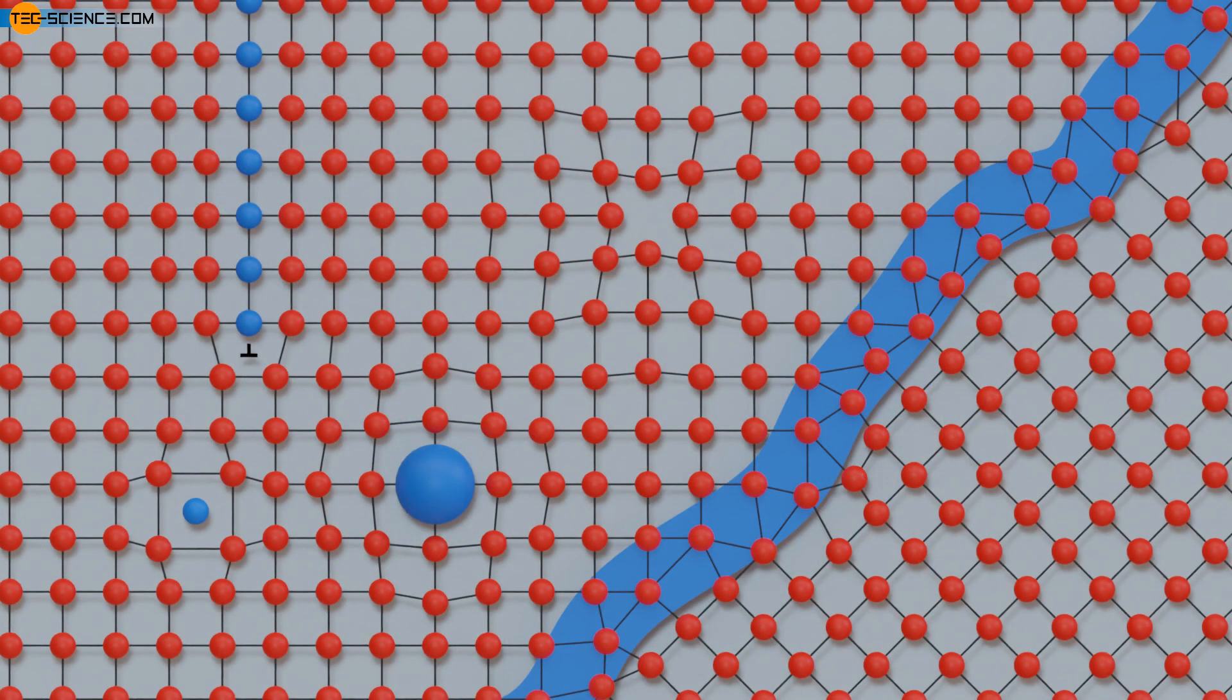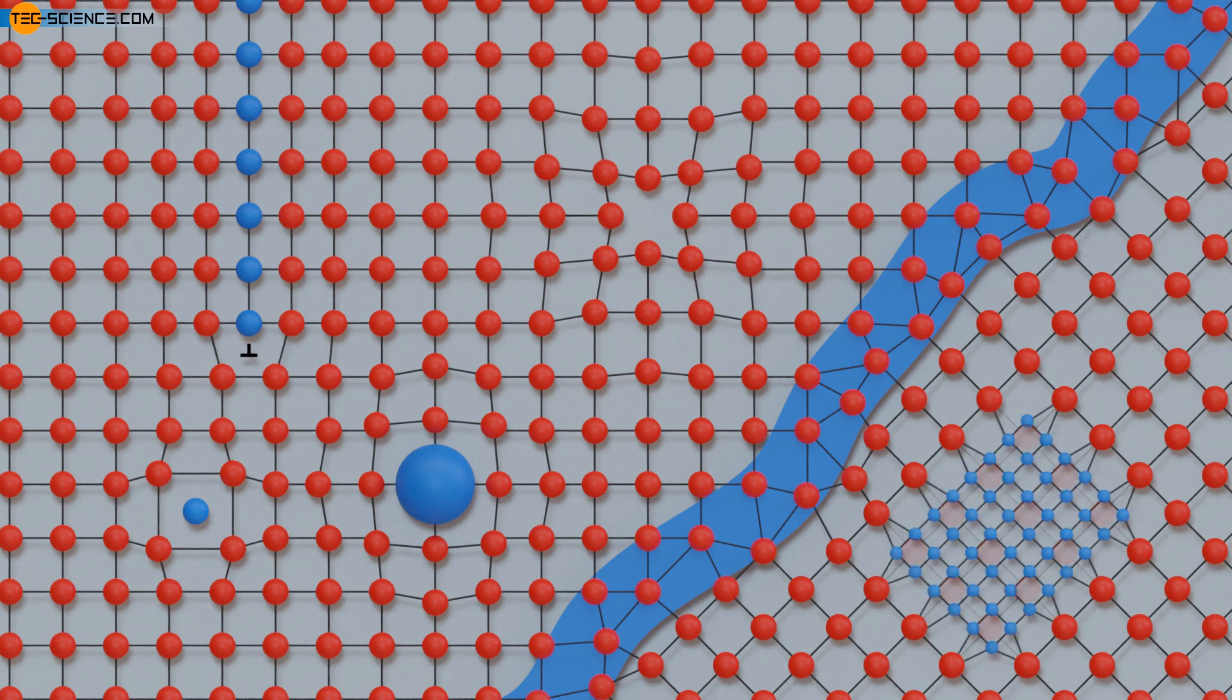The last type of lattice defects are the so-called bulk defects. These are also referred to as three-dimensional defects and disturb the lattice structure to a greater extent than the planar defects. Such three-dimensional defects include precipitations, for example. These are an accumulation of chemical compounds in the metal. Besides precipitations, pores, meaning microscopic cavities, or other inclusions also count as bulk defects.